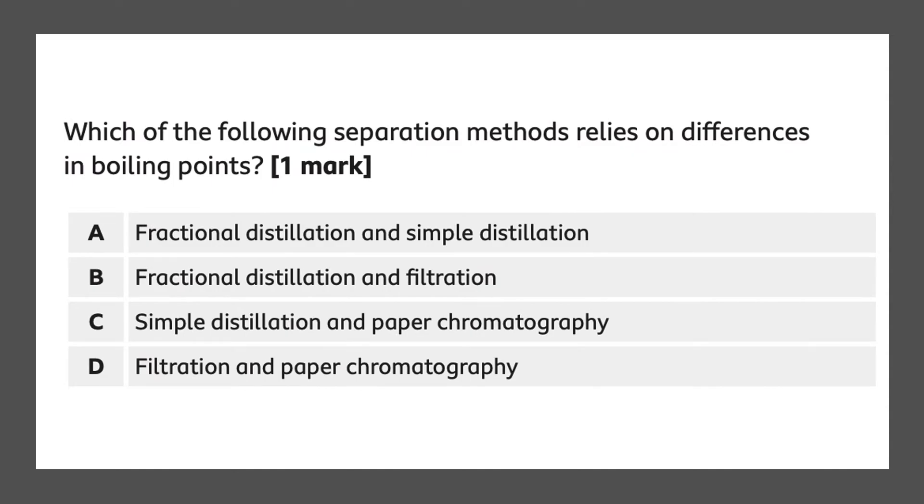Which of the following separation method relies on differences in boiling points? A, fractional distillation and simple distillation. B, fractional distillation and filtration. C, simple distillation and paper chromatography. Or D, filtration and paper chromatography. The correct answer to this would be A, and that would give you one mark.